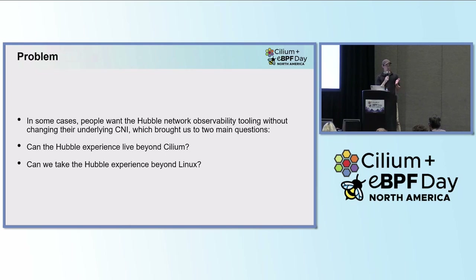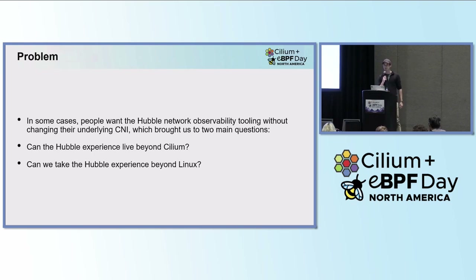The problem we had is that in some cases, people want Hubble network observability tooling without changing their underlying CNI. We had a surprising amount of people who wanted this — people running Cilium as well as people not running Cilium but liking Hubble. So we had two main questions: can we take the Hubble experience beyond Cilium, and can we take it beyond Linux?